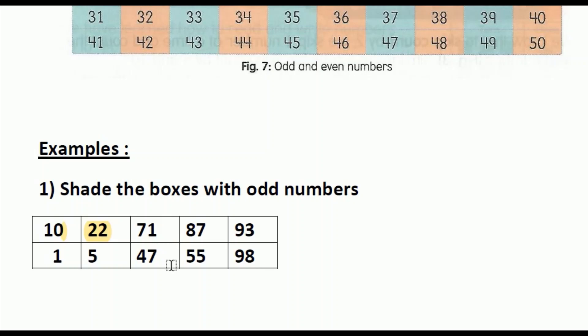Next is 47. 47 ends with 7, and 7 is an odd number, so we can color the number 47. After 47 comes 87. 87 ends with the number 7, and 7 is an odd number, so we can color the number 87. Next comes 55, which is an odd number, so we can color 55. After 55 comes 93. 93 ends with the number 3, and 3 is an odd number, so we can say that 93 is an odd number.